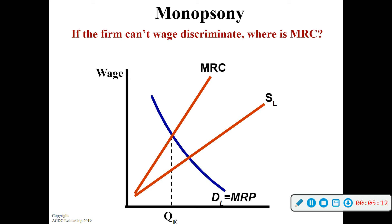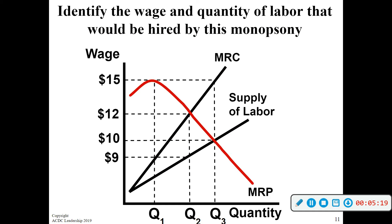Because of that, the MRC is greater than the supply of labor. We hire at quantity where MRC equals MRP. But with a monopsony, we pay based on the supply curve — which represents all the workers and the different wages they're willing to supply labor for. So even though we could pay more, we pay the lower wage because that's what workers are willing to work for. The wage is $9 and we hire whatever quantity that corresponds to on the supply curve.